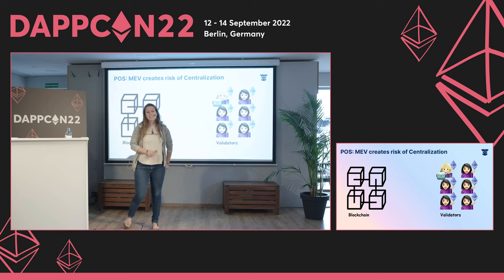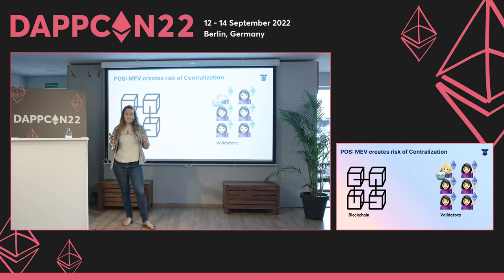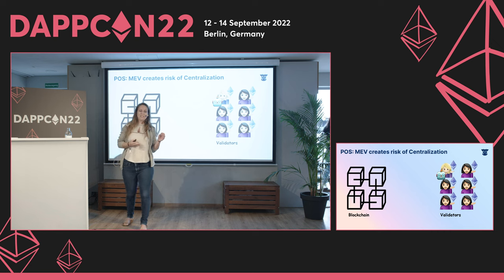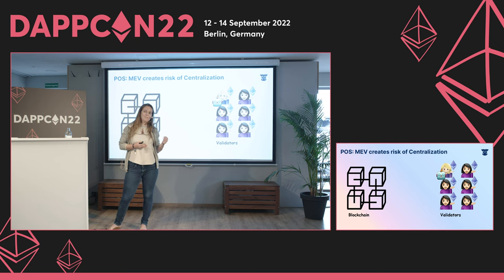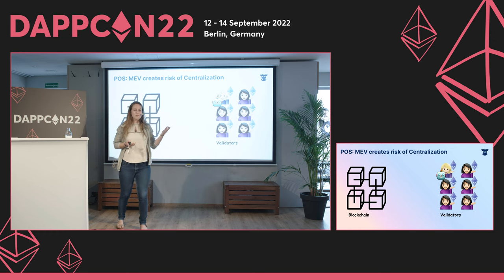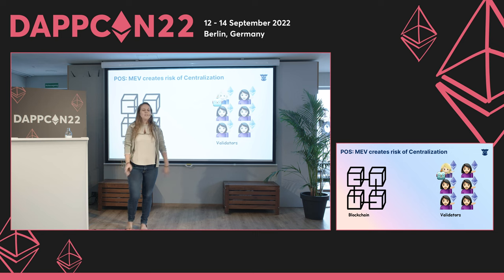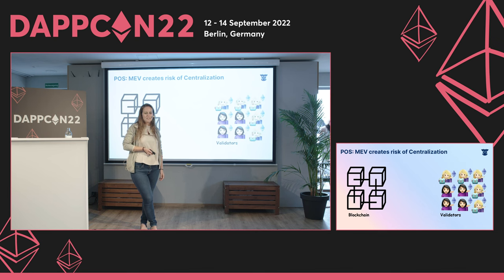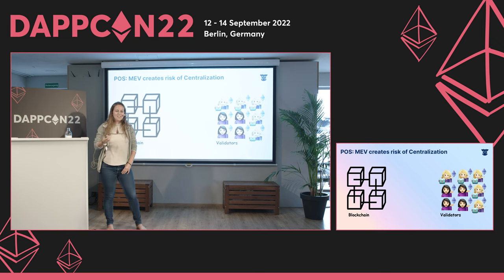What happens if one of the validators is able to extract MEV significantly better than anyone else? Over time, they would be able to increase more and more the rewards they're getting — not only by getting the validator reward but also by extracting value, meaning they get more rewards than everyone else.